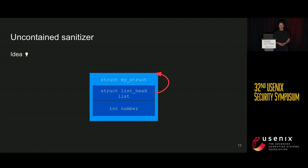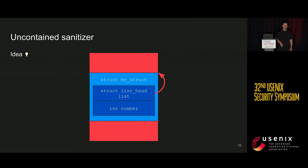We present the UNCONTAINED sanitizer, our dynamic analysis approach to find such bugs. The first talk already covered KASAN — address sanitizer and the red zones — so I'll keep this part shorter. We're going to repurpose the red zones that the address sanitizer puts around objects. For address sanitizer, those are used to detect buffer overflows, but we're going to use them to detect object boundaries.